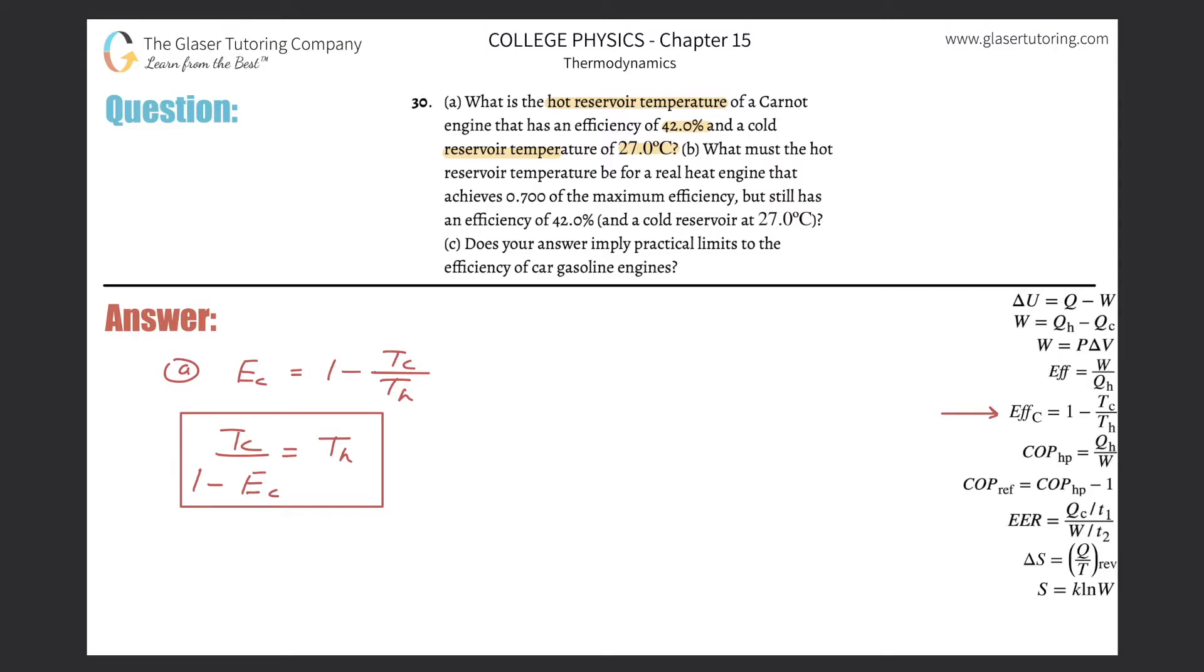So now we just have to plug in the values. Remember only Kelvin temperatures go in here. So we got to take the temperature of the cold, which is 27 degrees Celsius, and add 273 to that to find Kelvin. Then divide that by now 1 minus the efficiency. And they told us it's 42%, but we need that in decimal form.